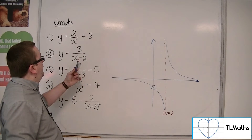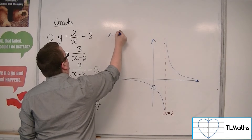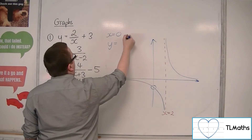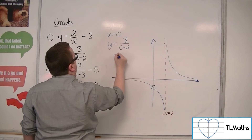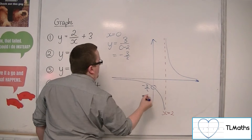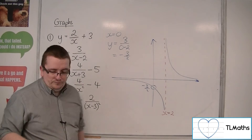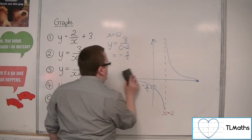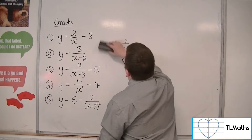We substitute x equals 0 to find where it crosses the y-axis: 3 over 0 minus 2 gives minus 3 halves. So the y-intercept is at minus 3 halves. That's number 2.